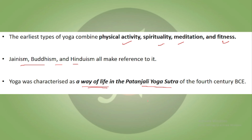Patanjali's Yoga Sutra gave the Ashtanga Marg — the eightfold path — which includes: Yam, Niyam, Asana, Pranayam, Pratyahar, Dharna, Dhyan, and finally Samadhi. This is the Ashtanga Marg given by Patanjali. It was this same Yoga Sutra that Swami Vivekananda studied and applied in his own life, and through these meditative techniques many changes occurred in him.